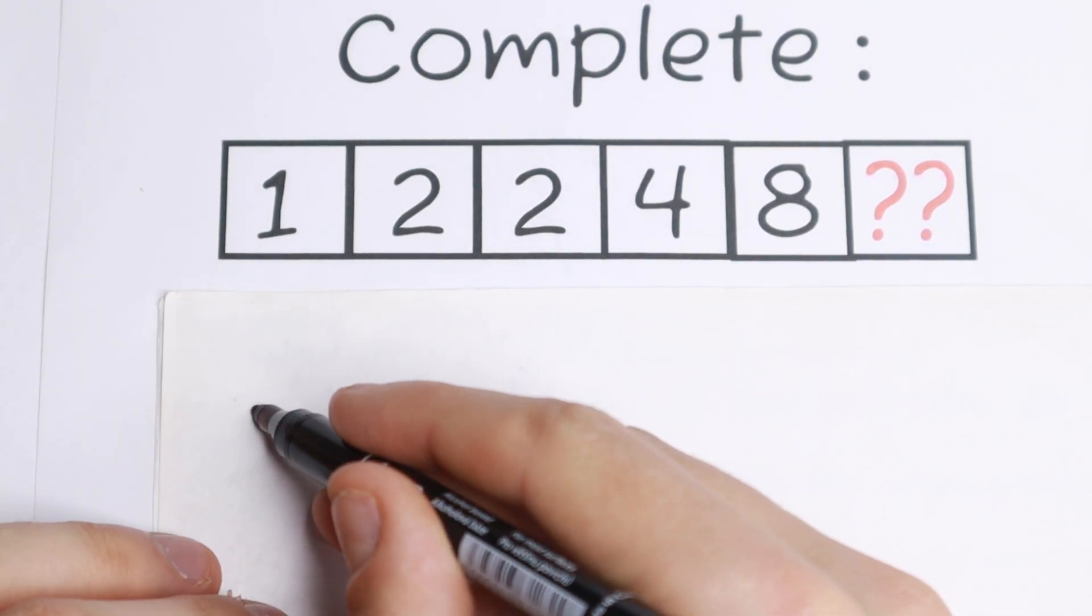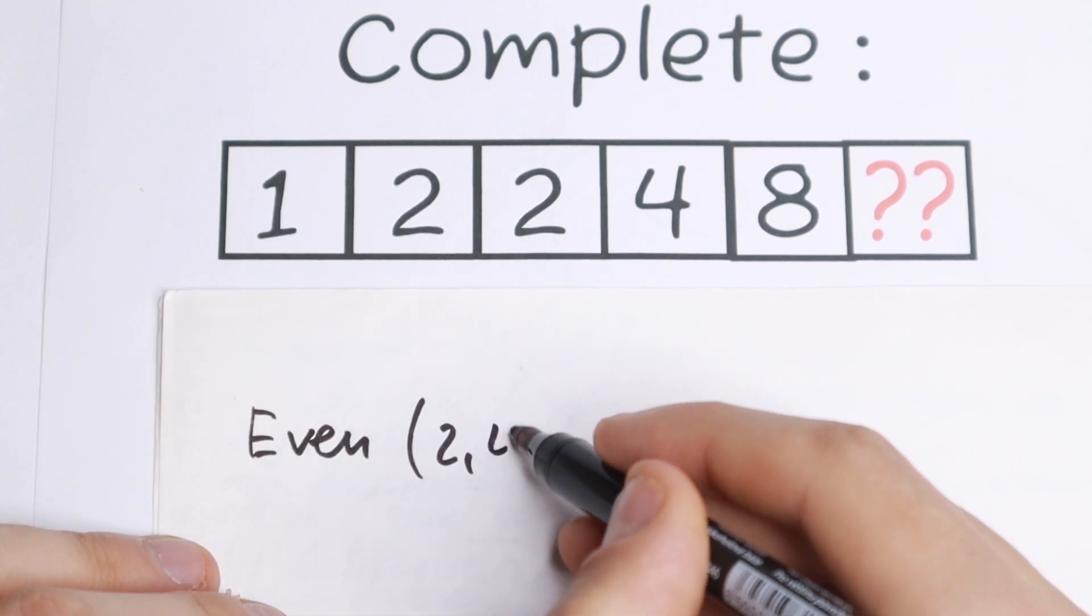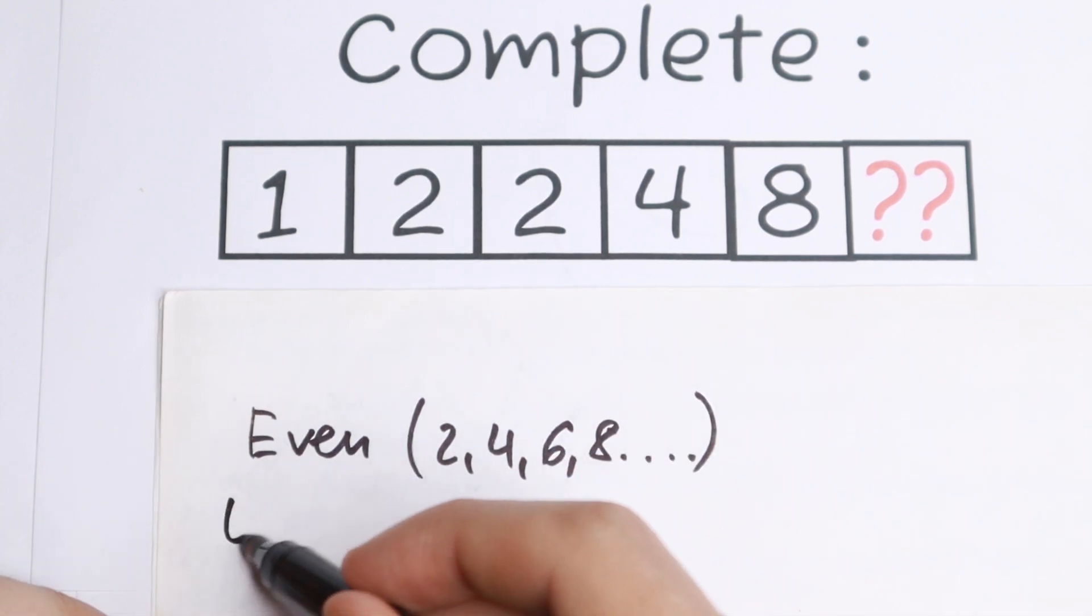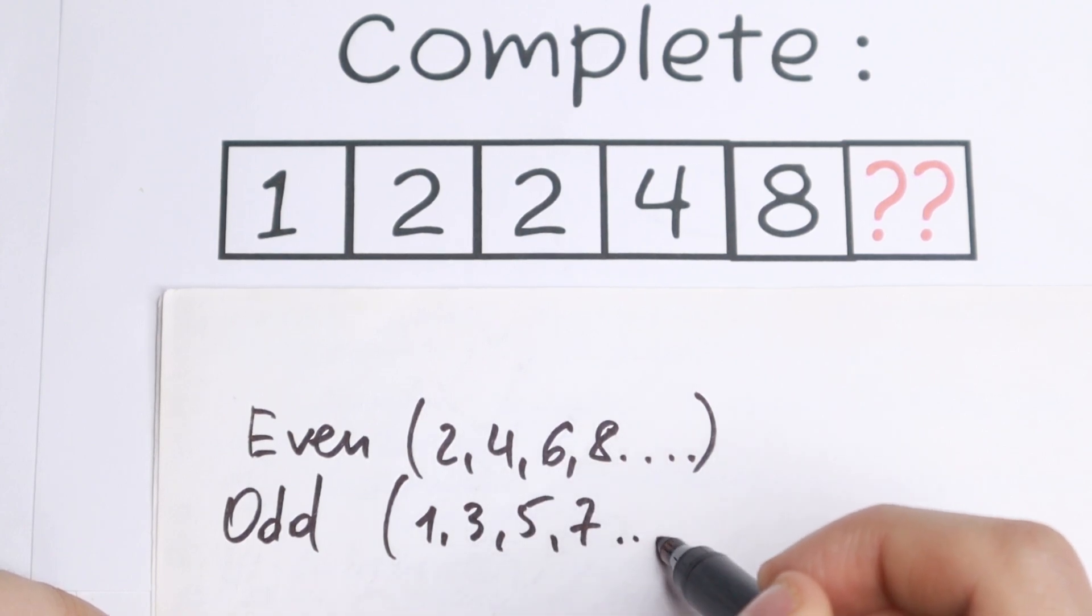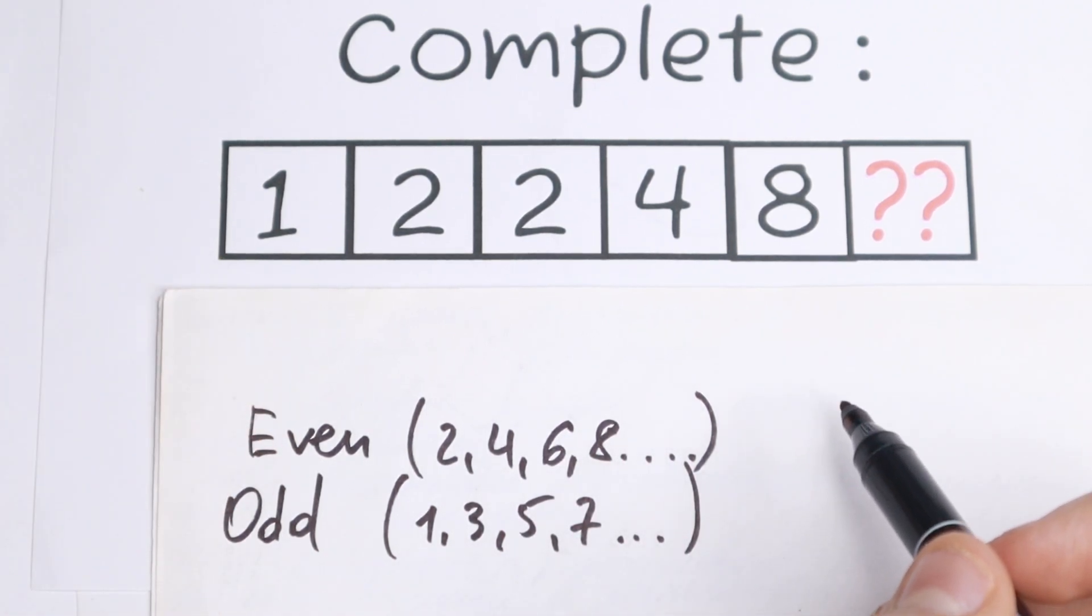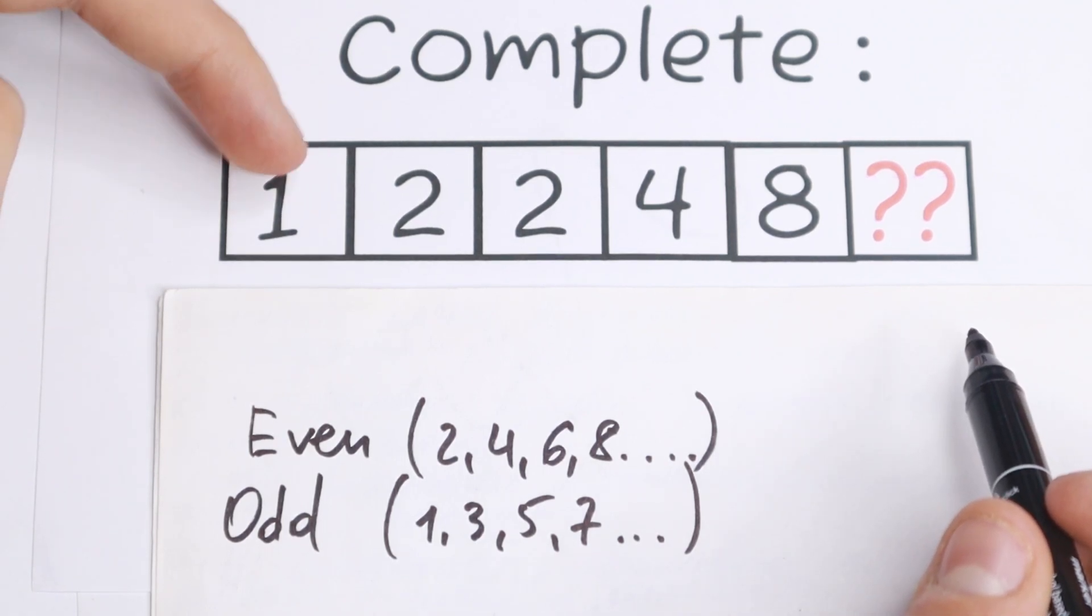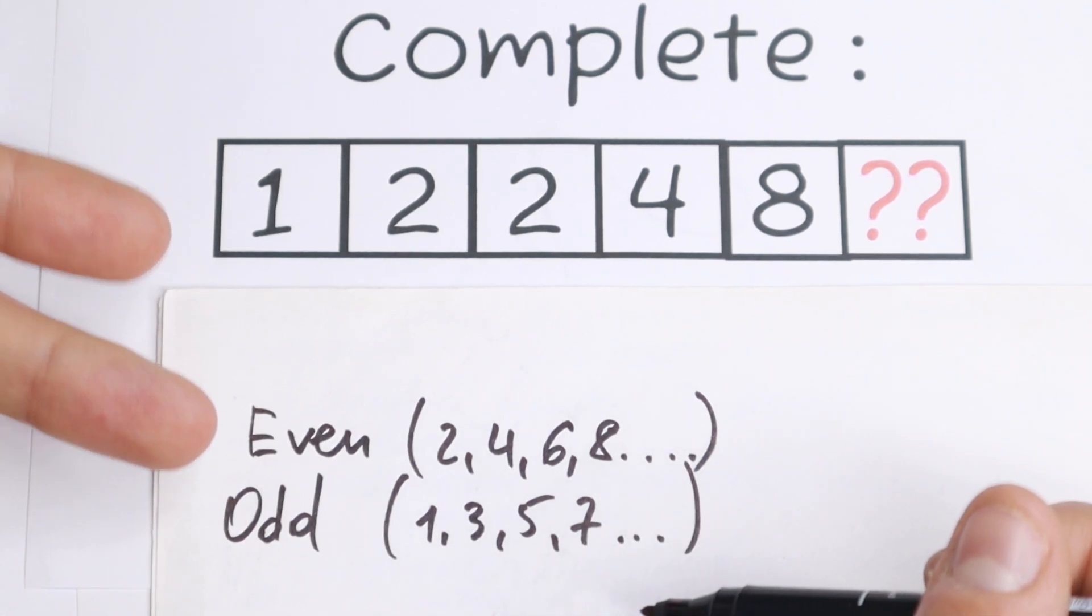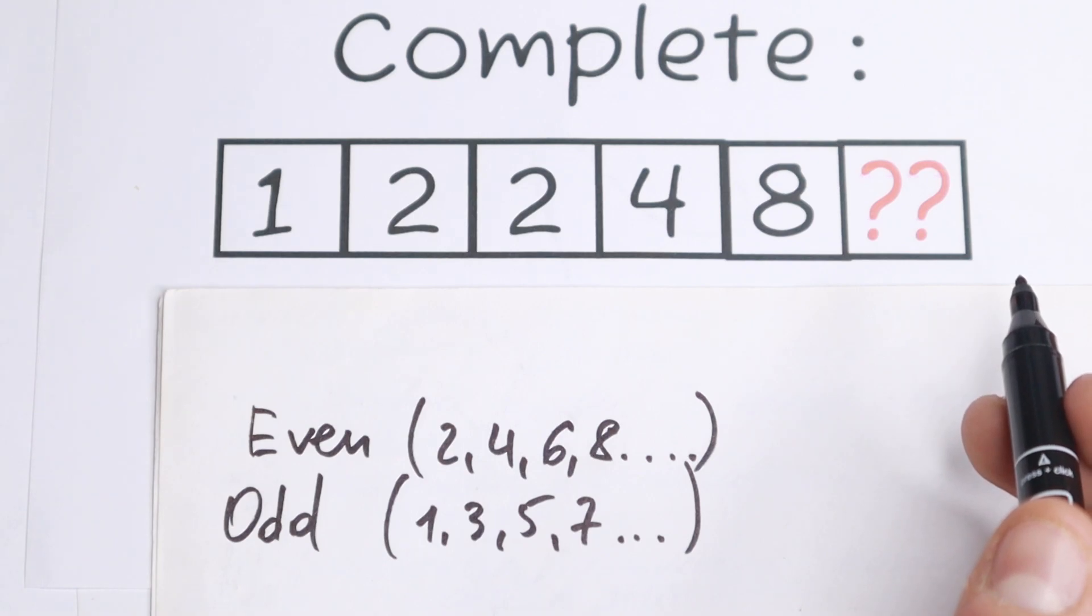Let's write even numbers: 2, 4, 6, 8. And we have odd numbers: 1, 3, 5, 7. So maybe we'll see some pattern. We have odd number, even, even, even, even. So there is no pattern using this logic. We have even and odd numbers, and there is no common pattern between all of these numbers.